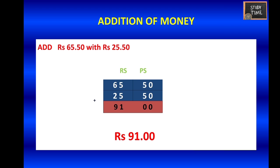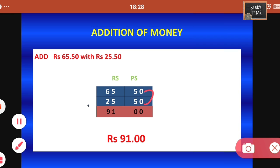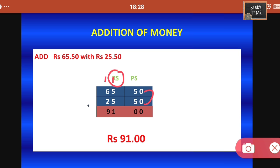Next we are going to see addition of money. Whenever you add or subtract money, you have to separately write rupees and paise. For example, 65 rupees 50 paise plus 25 rupees 50 paise: separately write rupees and paise, then add. 0 plus 0 is 0, 5 plus 5 is 10 — write 0 and carry 1; 1 plus 5 plus 5 is 11 — write 1 and carry 1; 1 plus 6 plus 2 is 9. So the answer is 91 rupees.